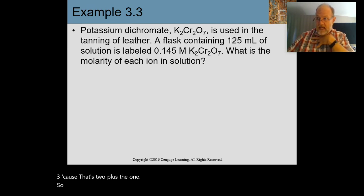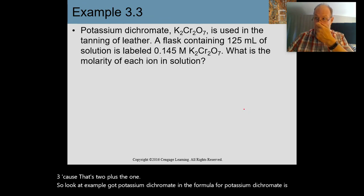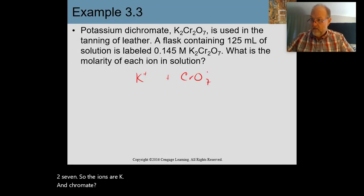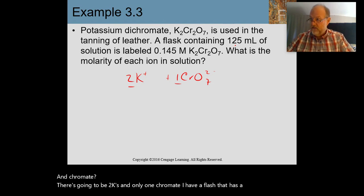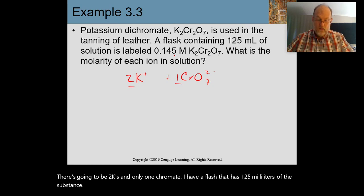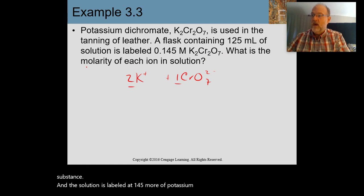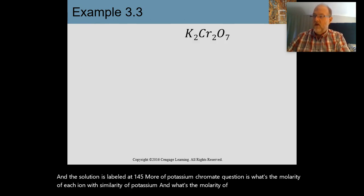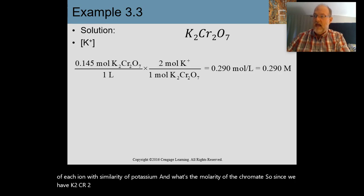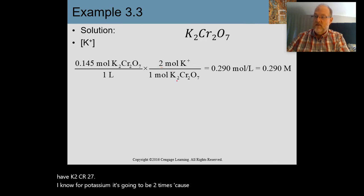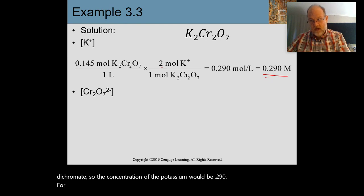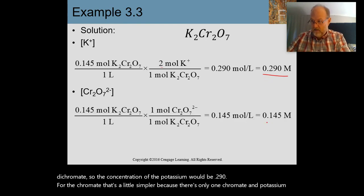Let's look at an example with potassium dichromate (K₂Cr₂O₇). The ions are K⁺ and dichromate. There are two K⁺ and one dichromate per formula unit. Given a 125 mL flask labeled 0.145 M potassium dichromate, the molarity of potassium ions is 2 × 0.145 = 0.290 M. The molarity of the dichromate ion is the same as the original — 0.145 M — since there is only one dichromate per formula unit.